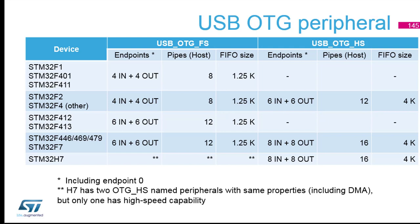Here is a summary of capabilities across different families. On device-only parts the endpoint count is limited to eight, and the FIFO size is 1.25 KB. On high performance high speed parts, the FIFO can be 4 KB and the number of endpoints is 16. Note there was a typo on your slide showing 18 endpoints — the correct number is 16.